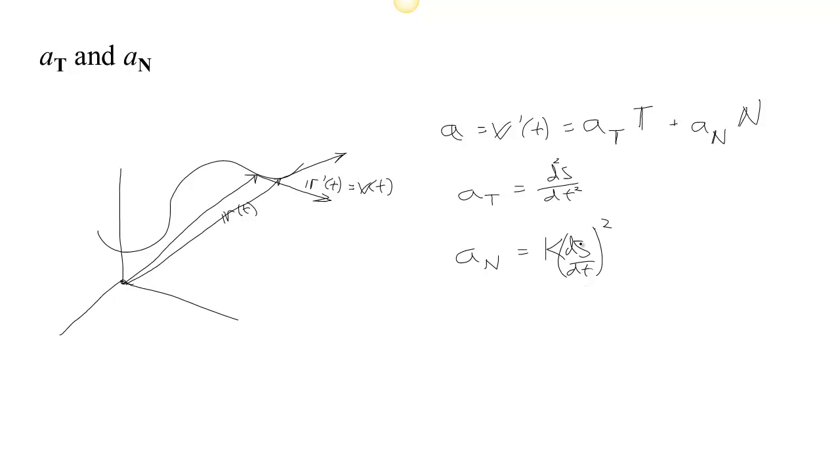So in other words, if you go faster, you're going to need more normal acceleration to turn on the curve, or if the curve is more curvy, you're going to need more normal acceleration. So we'll derive these relations as we go along.